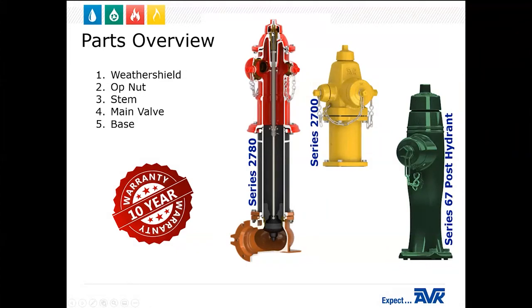The second one is the op nut, that's this brass piece in here. Then you have a stem, and that goes down the entire bury of the hydrant. The stem is two pieces, and I'll explain that. Then you have your main valve down here at the bottom, at the base or what we call the shoe. These are the key components to the operation of a fire hydrant. Our fire hydrants carry a 10-year warranty.